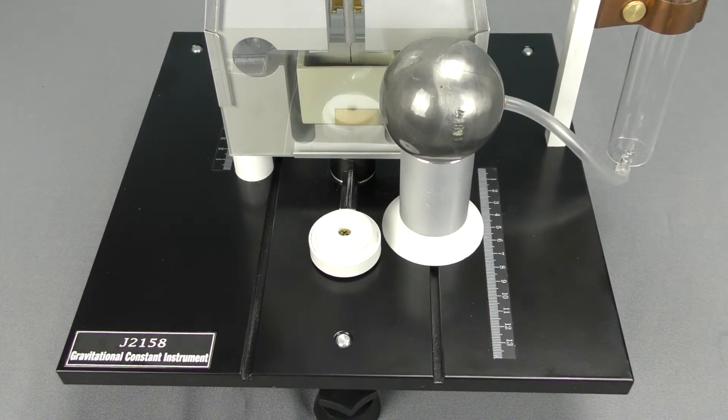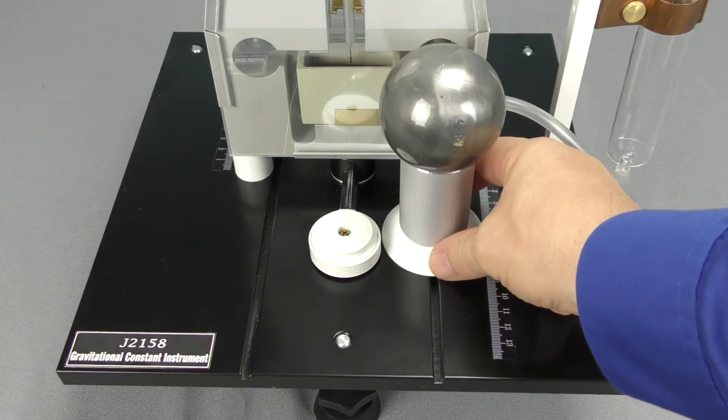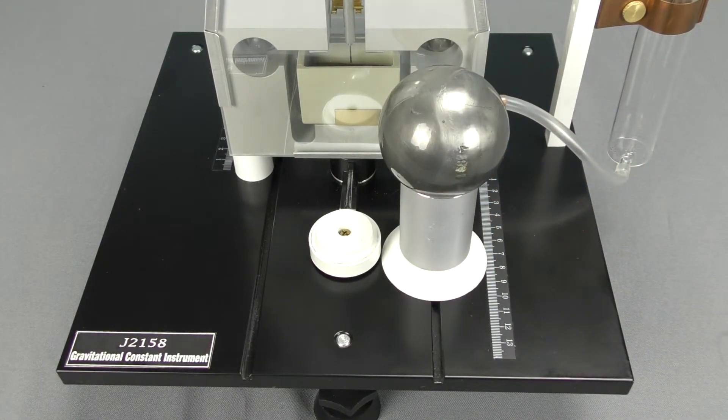And you would measure the distance that it is from the pendulum ball. Initially wait for it to come to rest, record the laser's position. Move both balls on either side the same distance, allow it to stabilize, and record the laser's position.